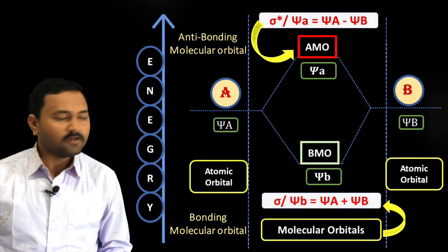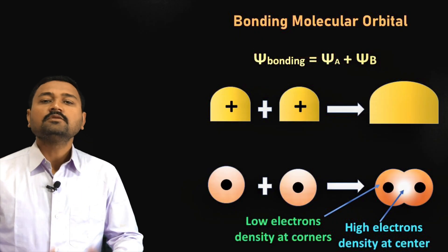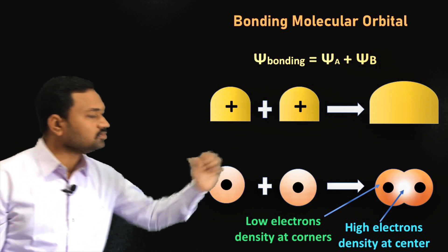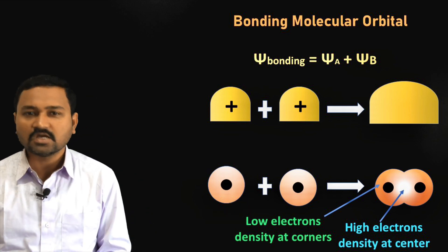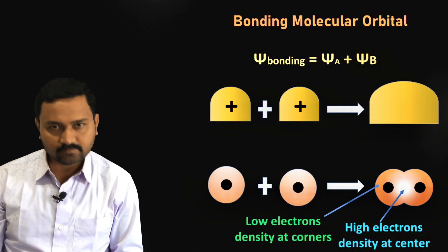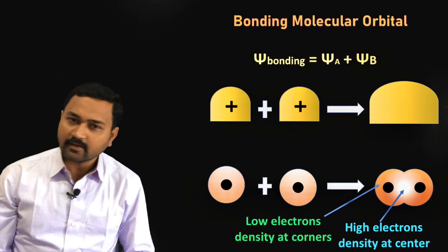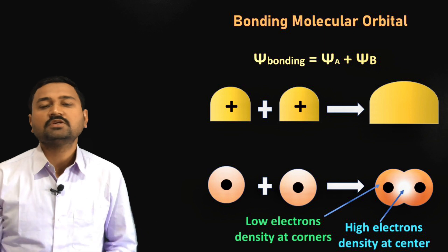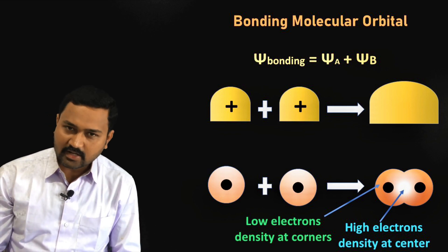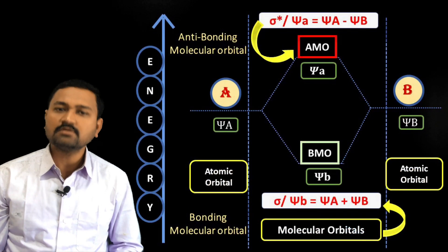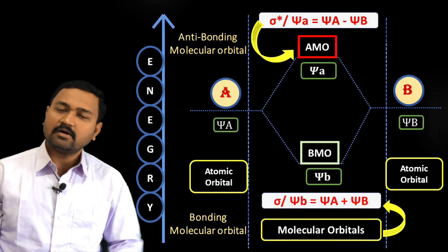In the bonding molecular orbital formed by the linear combination of atomic orbitals, the electron density is present between the two nuclei of the combining atoms, while there is very less electron density at the corners. This means the electron is under the influence of both nuclei of the combining atoms, as already discussed in the postulates of molecular orbital theory. The addition of two wave functions of two combining atoms forms the bonding molecular orbital with lower energy and greater stability.